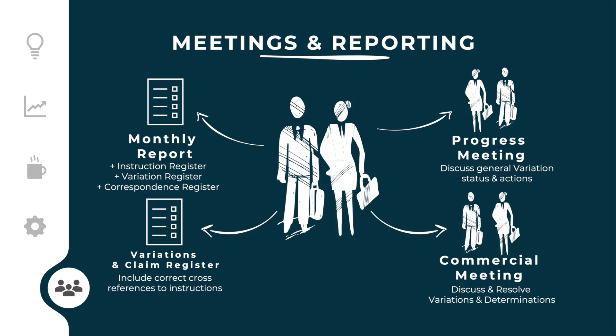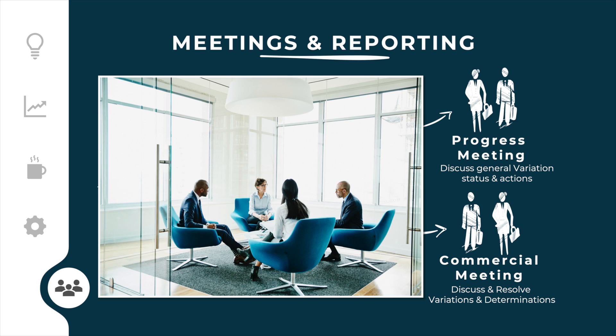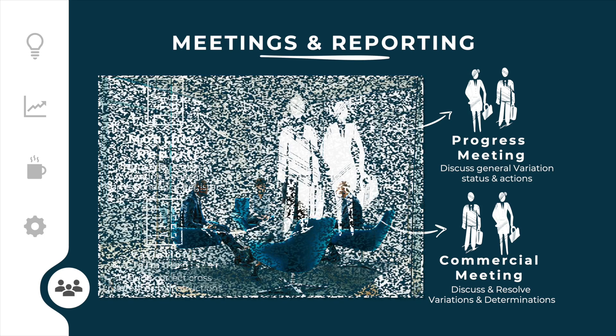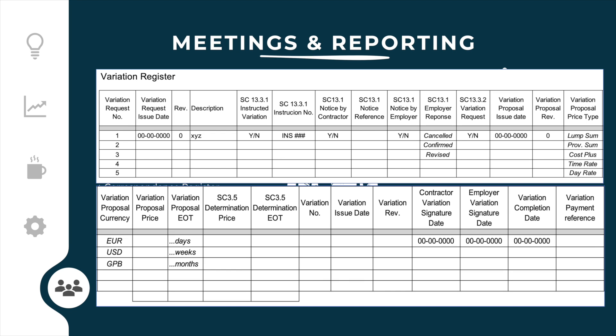The parties shall conduct regular progress meetings in which the status of the variations is discussed. The parties shall also conduct regular commercial meetings in which the variations are discussed in detail and issues are resolved. To manage, track and control the variations, the contractor shall prepare and maintain a detailed variation register, which shall be included in the monthly progress report. The variation register can be expanded with more columns as required by the parties if a spreadsheet is used as a tool.